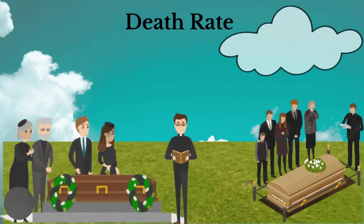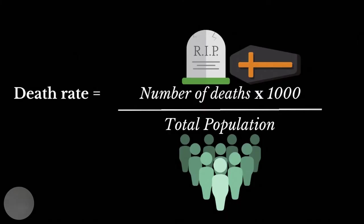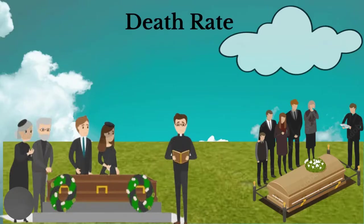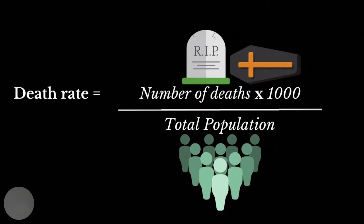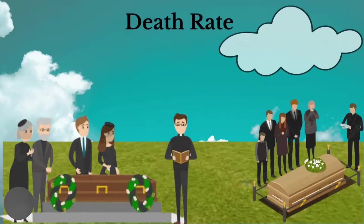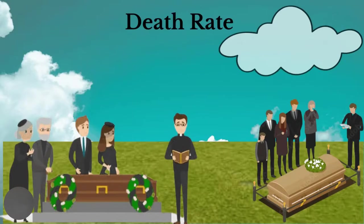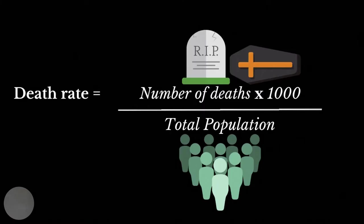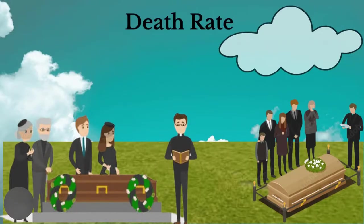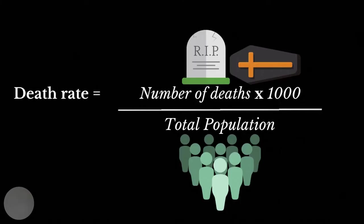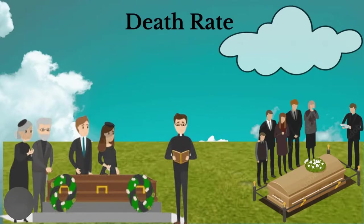Death rate refers to the number of individuals dying per 1,000 persons per year. To calculate death rate, we multiply the number of deaths by 1,000 and divide it by the total population. When we talk about death rates, we also need to talk about infant mortality rate as well as child mortality rate. Infant mortality rate is the number of deaths in the age group 1 to 12 months per 1,000 live births per year. Child mortality is the number of deaths of children up to age 5.